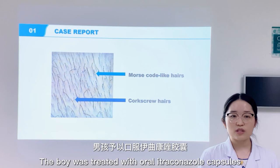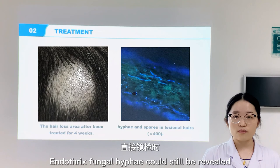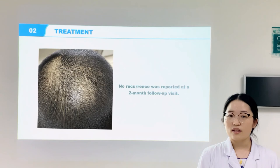The boy was treated with oral itraconazole capsules and topical luliconazole cream. Hairs in alopecia areas were still loose and easy to pull out after being treated for four weeks. Endothrix fungal hyphae could still be revealed by microscopy examination in the lesional hairs.